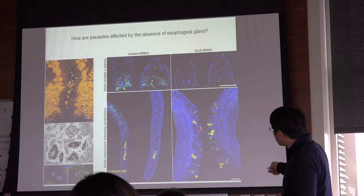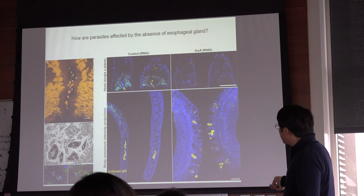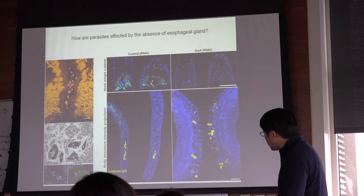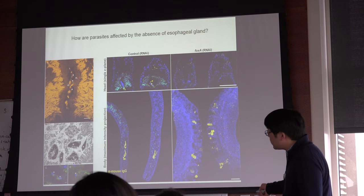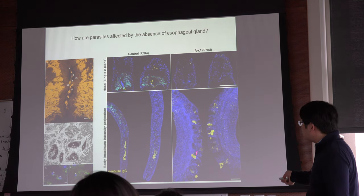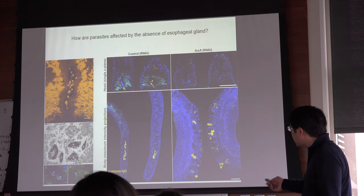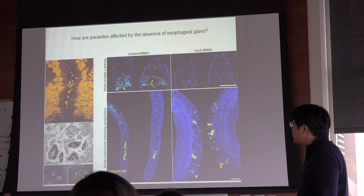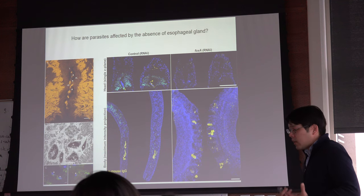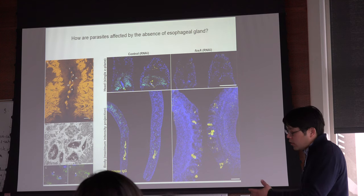Instead, what you see in the FOXA RNAi is an accumulation of big IgG aggregates. We're not sure what these are — the antibody may be causing aggregation of different ingested material. This is perhaps causing these parasites to accumulate damage and ultimately destroying the tissue of the parasite.